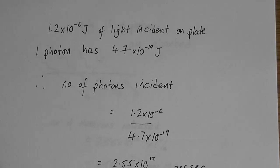The next thing I want to know is how many photons are incident on that plate. I can do that this way: you know that 1.2 times 10 to the minus 6 joules is incident on the plate in one second.